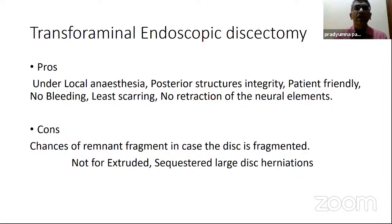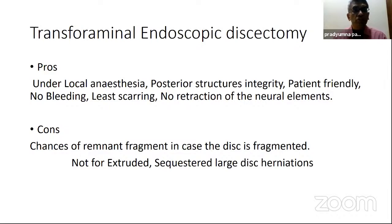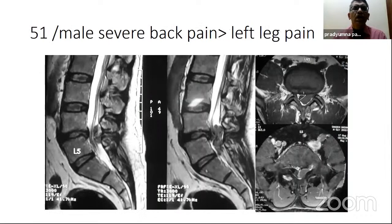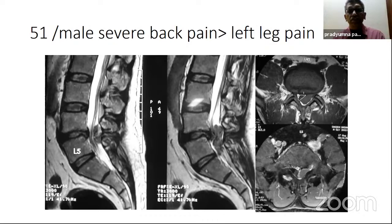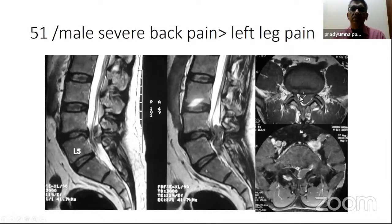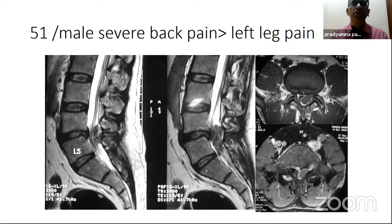The cons of transforaminal approach: in a fragmented disc, there is a chance of a remnant fragment which can be symptomatic, and transforaminal axis is not good for extruded and sequestered large disc herniation. Consider this — this is an L4-5 large extruded disc herniation, so much extruded that the fragment is lying posterior to the thecal sac. The thecal sac is not even seen. This was a 51-year-old male who was insistent on an endoscopic procedure.